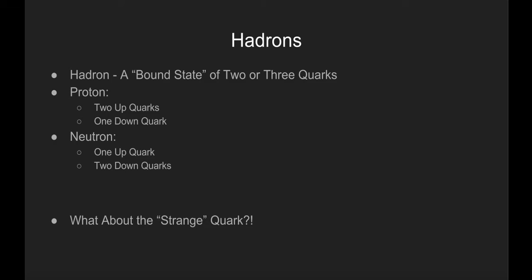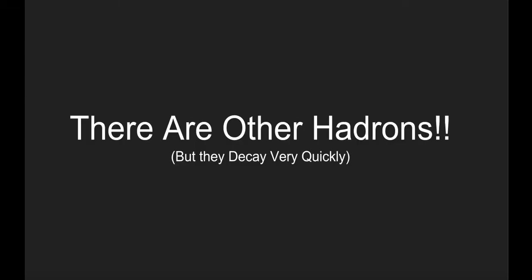But what about that other strange quark? If protons and neutrons make up all matter, and they only consist of up and down quarks, then what are strange quarks for? It turns out that there are numerous other hadrons besides the familiar proton and neutron.